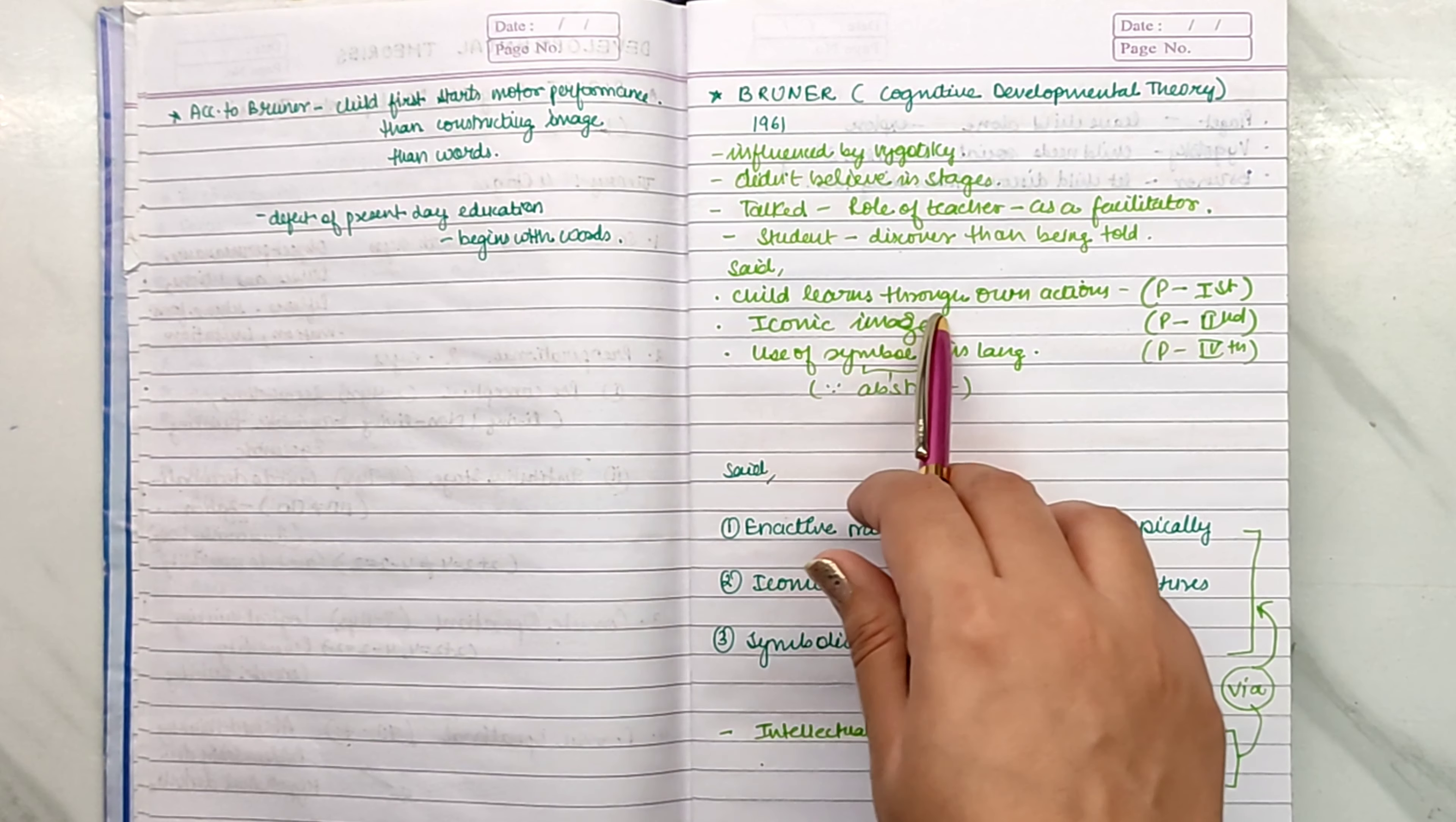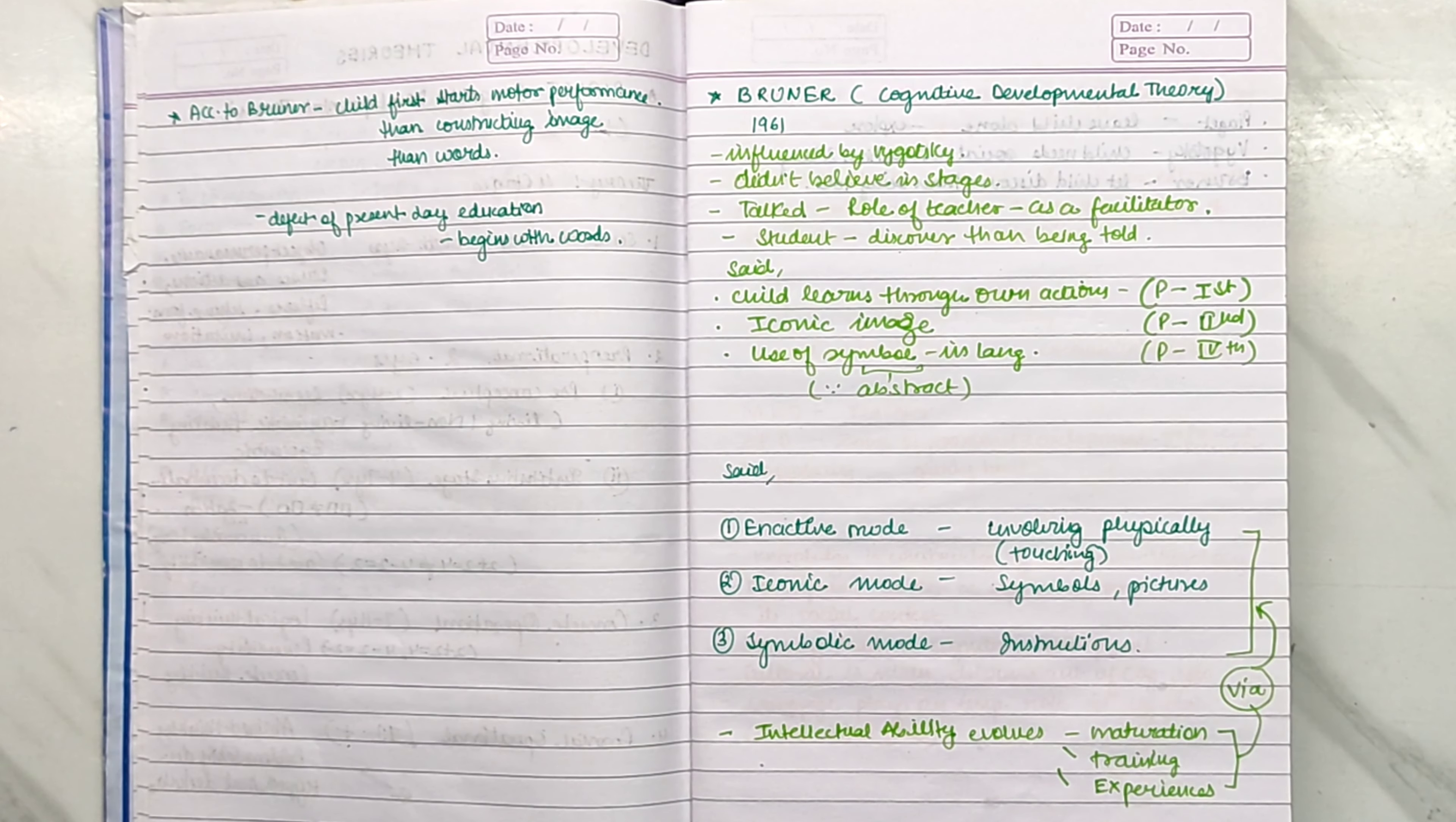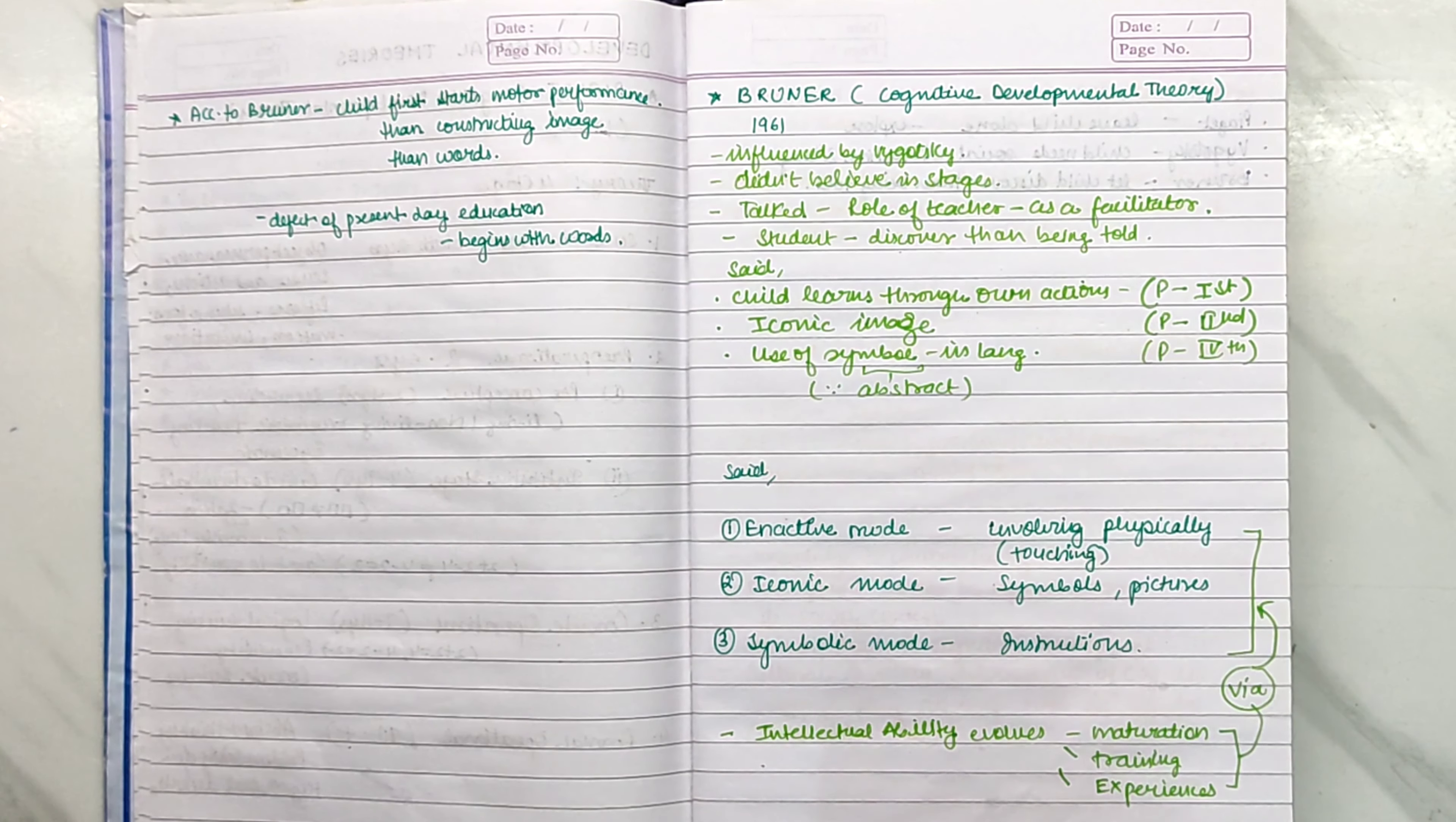He also said children learn through their actions. The children learn through their actions. This is in the first stage of Piaget's first stage, via reflexes and senses. The iconic mode is Piaget's second stage. Then Bruner talked about the use of symbols, which is an abstract concept in language. Piaget's fourth stage is abstract thinking. This is in the fourth stage.